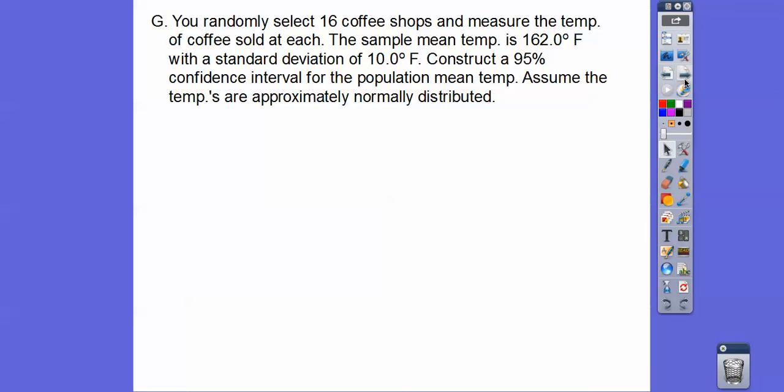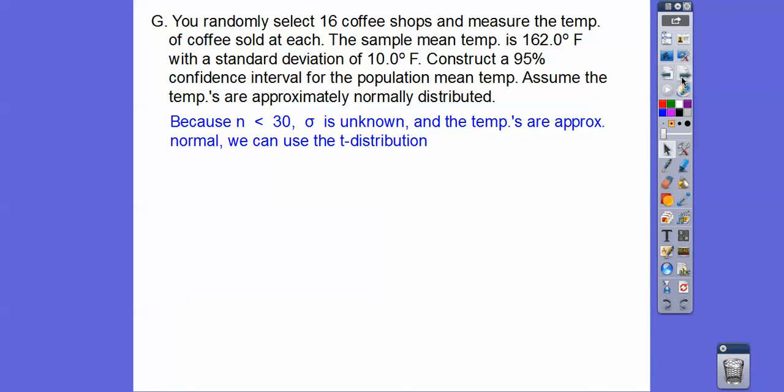We randomly select 16 coffee shops and measure the temperature of coffee sold at each. The sample mean temperature is 162 degrees Fahrenheit with a standard deviation of 10 degrees Fahrenheit. We want to construct a 95% confidence interval for the population mean temperature, and we're told to assume the temperatures are normally distributed. Because n is less than 30, the standard deviation is unknown, and temperatures are stated to be normally distributed, we can use the t-distribution.